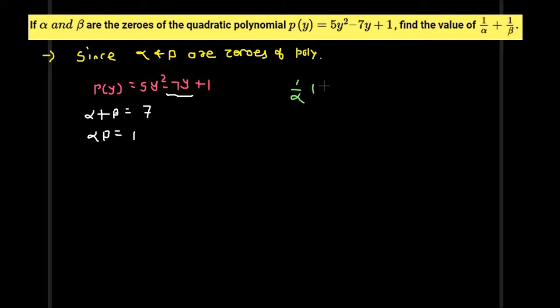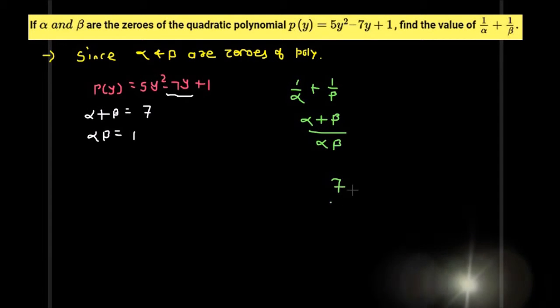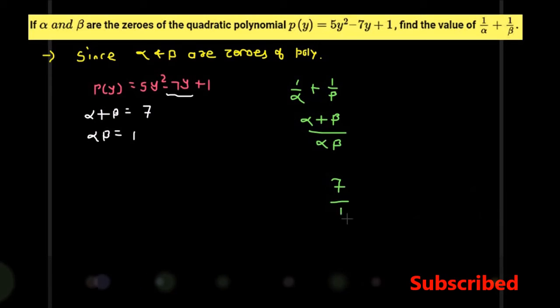1/α + 1/β equals (α + β)/(αβ), which gives us 7/1 = 7.